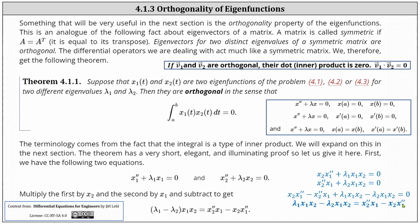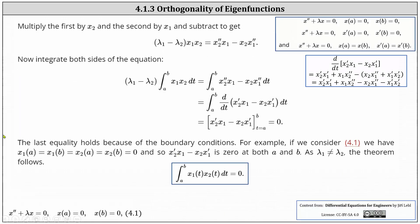We move the two terms that don't contain a lambda to the right, giving us lambda 1 x1 x2 minus lambda 2 x1 x2 equals x2 double prime x1 minus x2 x1 double prime. On the left we factor out the common factor of x1 x2, giving us (lambda 1 minus lambda 2) times x1 x2 equals x2 double prime x1 minus x2 x1 double prime. We then integrate both sides with respect to t from a to b, factoring out the constant lambda 1 minus lambda 2 on the left.